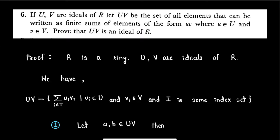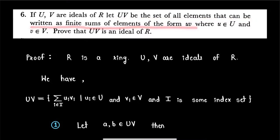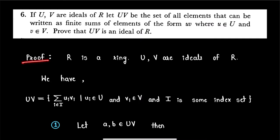Hello friends, welcome back to Rising Mathematics. In this video I am going to solve an exercise question from the book 'Topics in Algebra', from chapter 3 on ring theory. The question is: if U and V are ideals of ring R, and let UV be the set of all elements that can be written as finite sums of elements of the form uv, where u is from ideal U and v is from ideal V — prove that the product of ideals UV is also an ideal of ring R.